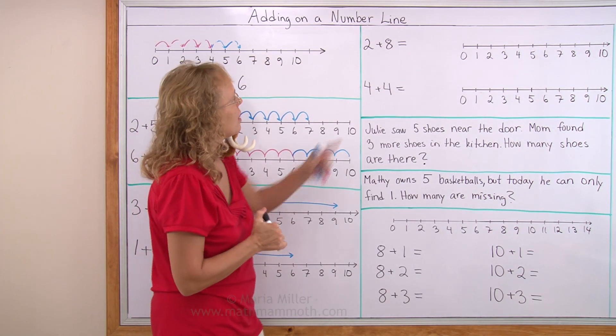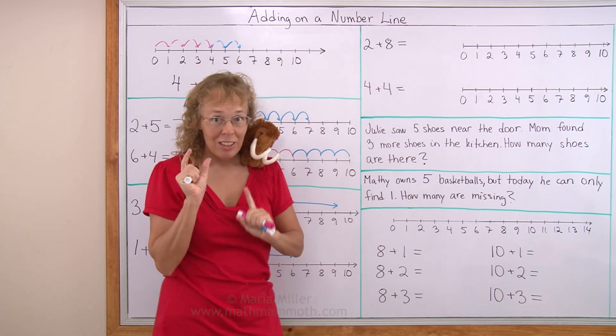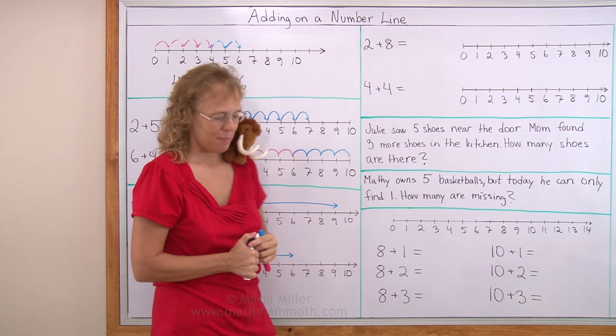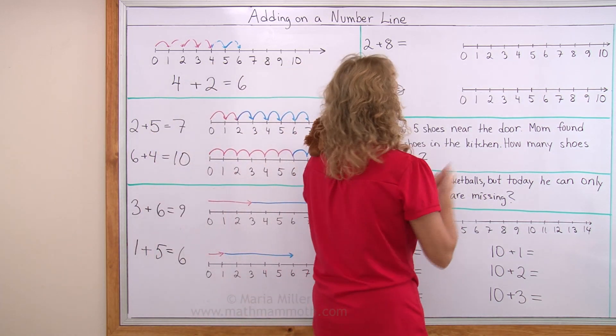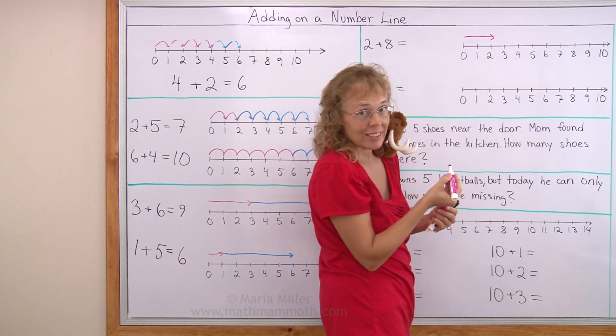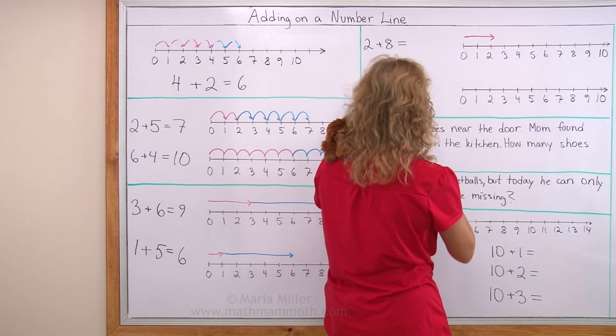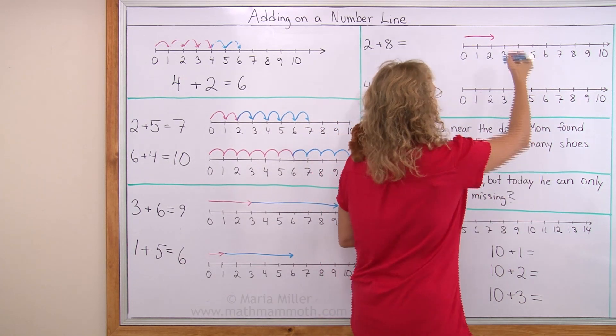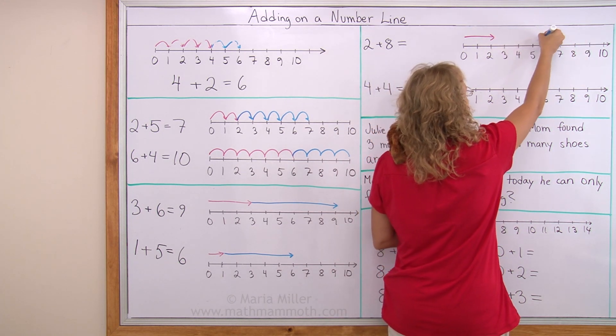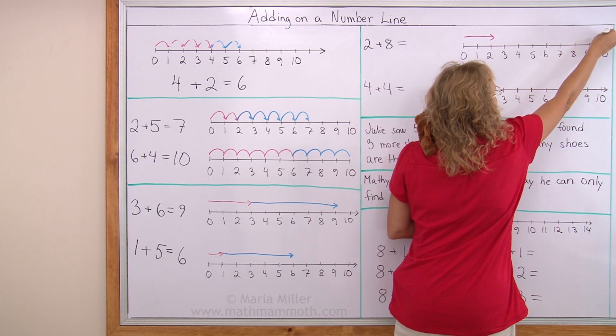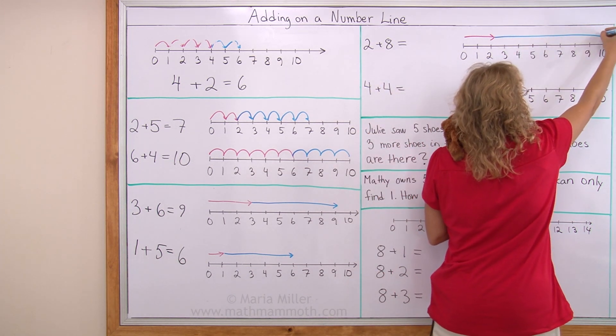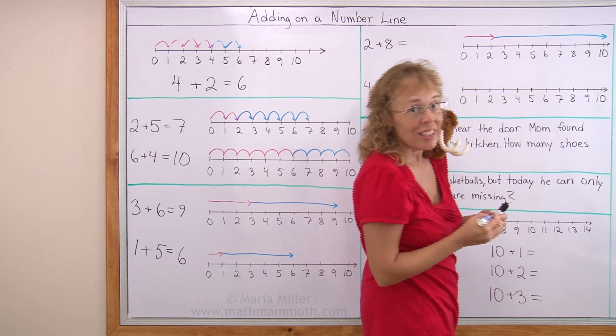Let's try over here. Instead of little jumps, I'm gonna draw arrows for 2 plus 8. So my first arrow is like 2 jumps long, like that. And my second arrow should be 8 long. So let me figure out how far it goes. 1, 2, 3, 4, 5, 6, 7, 8. It has to go all the way to 10. From here to 10. And then it is 8 units or 8 jumps long.